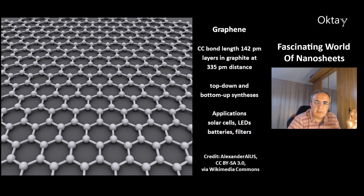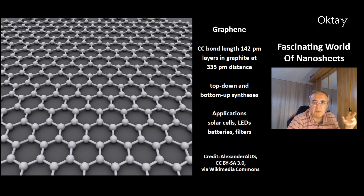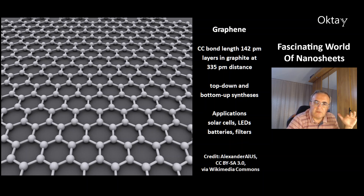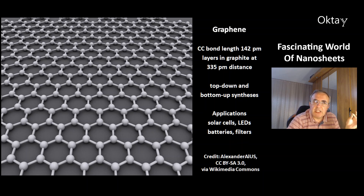For graphene, there are several methods for synthesis, including top-down and bottom-up methods. Bottom-up means building from smaller atoms, and top-down means, for example, starting from graphite — from bulk materials by separating the layers. There are many applications for graphene, including solar cells, LEDs, batteries, and filters.